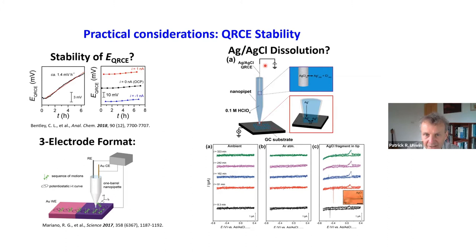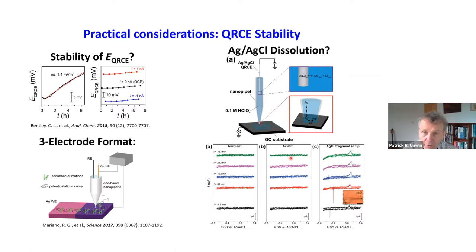Cameron did an experiment where he deliberately placed the silver-silver chloride electrode in the back of the probe in a rough manner and a little fragment of silver chloride broke off. In that case, after a very brief time you have problems — you start to see silver chloride appearing on your surface, messing up the electrochemical process and contaminating the surface due to bad placement of the electrode.